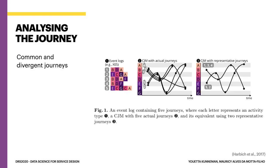Next to extracting actual journeys from digital traces, the next step is to analyze this data. Once we have extracted the data to see what the actual journeys are, we can go further and analyze with data science whether there are common or divergent journeys, and even predict — if you have a live user and can see certain steps, these models can predict the likely next step for this user.